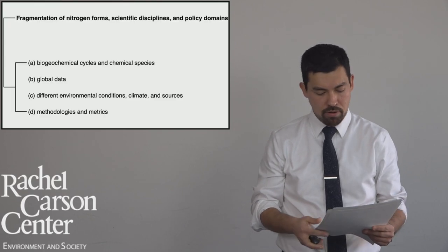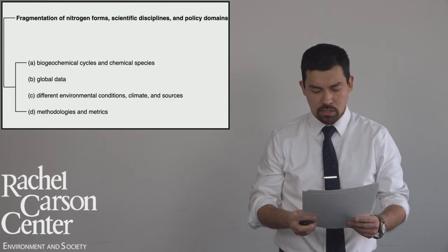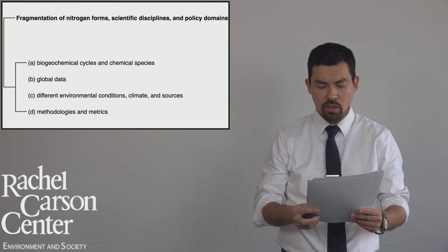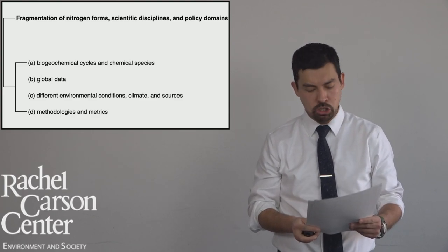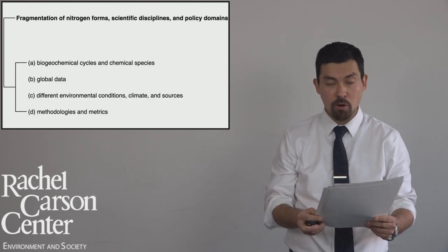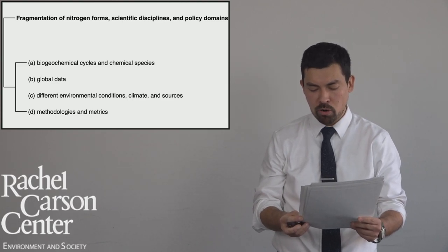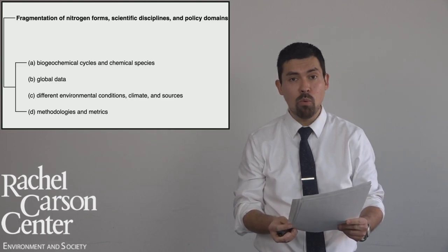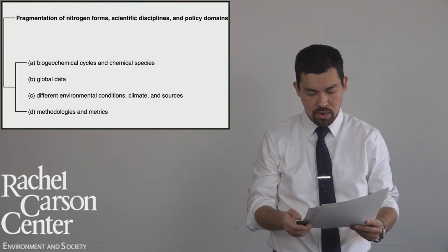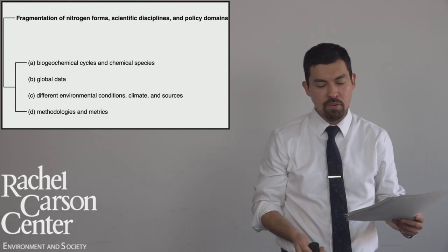At a national level, major policy instruments addressing nitrogen pollution in Europe and the United States have indeed followed these epistemic and chemical divisions. Policies have mostly addressed a particular nitrogen form and environmental media in which the pollution form occurs, for instance drinking water or air pollution. At an international level, this challenge becomes even larger.